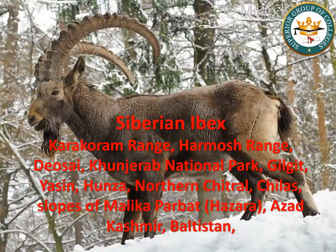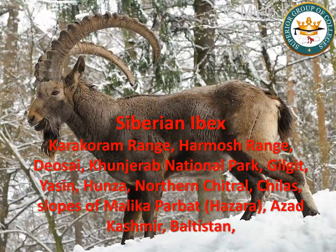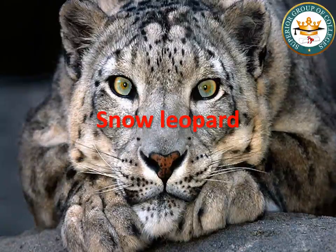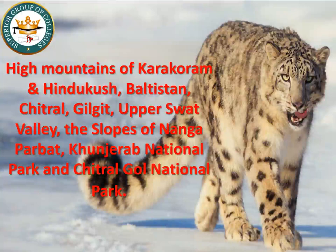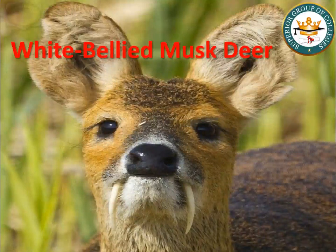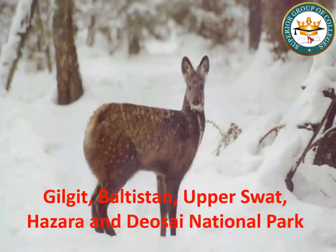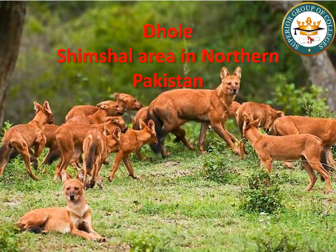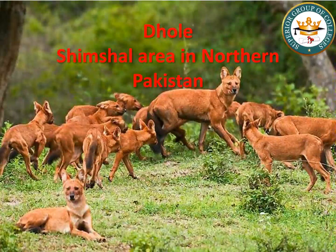Siberian ibex is found in Karakoram and Haramosh ranges at high altitudes in Deosai Plains, Khunjrab National Park, Gilgit, Hunza, Northern Chitral, Chilas, slopes of Malika Parbat in Hazara, Azad Kashmir, and Baltistan. Next, Snow leopard is the state animal of Pakistan, found in northern areas, Karakoram and Hindu Kush ranges — specifically Baltistan, Chitral, Gilgit, Upper Swat, Nanga Parbat slopes, Chitral Gol National Park, and Khunjrab National Park. White-bellied musk deer is present in Himalayan ranges — Gilgit, Baltistan, Upper Swat, Hazara, and Deosai National Park. Dhole, also known as Asian wild dog, is found in Shimshal Valley in Gilgit-Baltistan, in the northern areas of Pakistan.